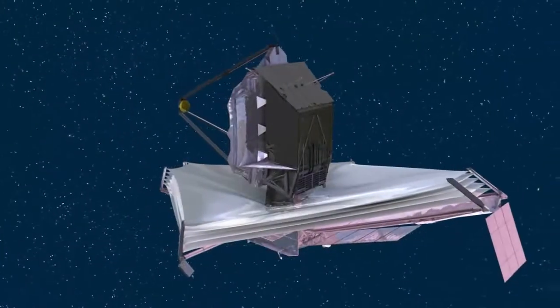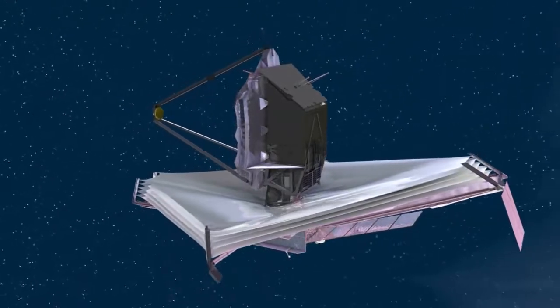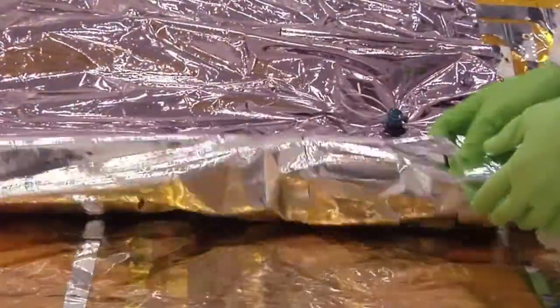The sunshield is comprised of five layers of material called Kapton, which will be coated with aluminum on one side to reflect sunlight and silicon on the other side to dissipate heat.